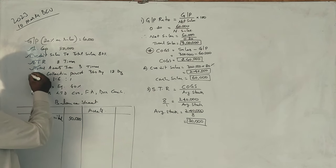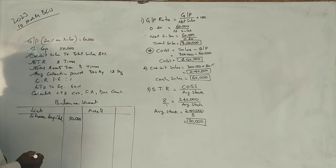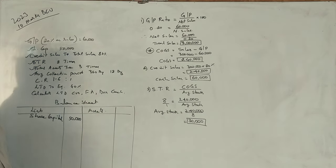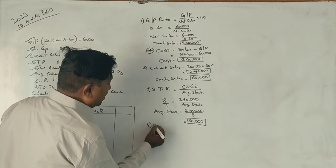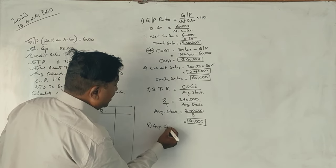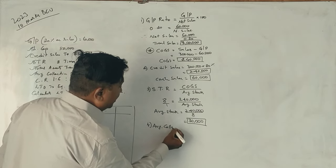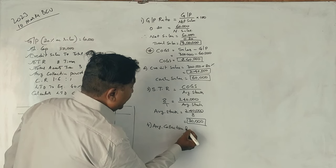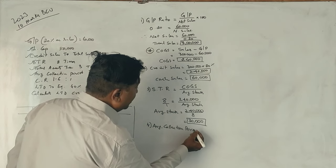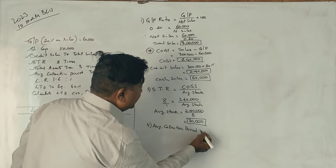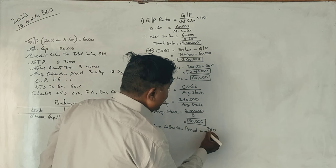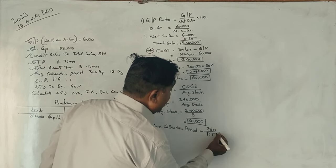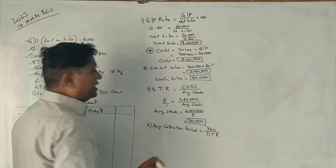Next, average collection period is 360 days divided by the debtors turnover ratio.